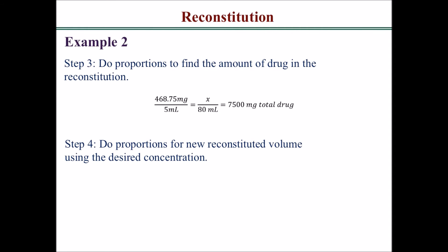Next, use proportions to find the new reconstituted volume using the desired concentration. The desired concentration from the previous step is 150 milligrams per 5 ml. For 7,500 milligrams to have that same concentration, you need 250 ml of total volume.